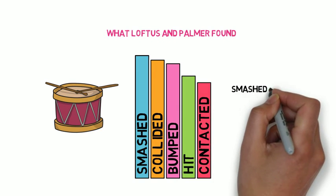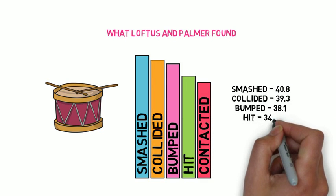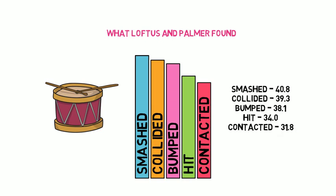That's the order of the speed estimates. Mean speed estimate, smashed 40.8, collided 39.3, bumped 38.1, hit 34, contacted 31.8. Those are the mean estimates of the speed across those seven videos.